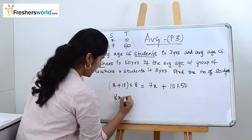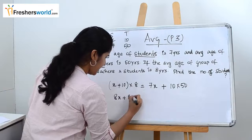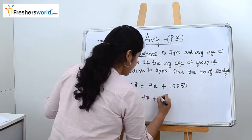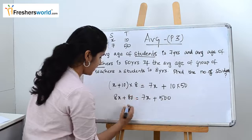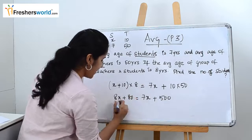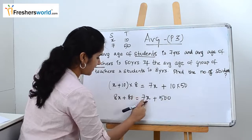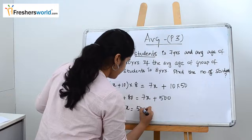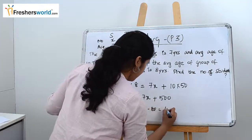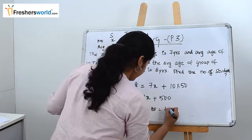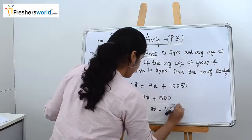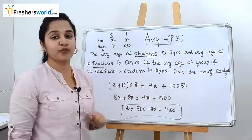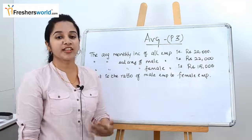Solving the equation: 8x plus 80 equals 7x plus 500. Taking x to one side gives 8x minus 7x equals x, and 500 minus 80 equals 420. So the number of students is 420.